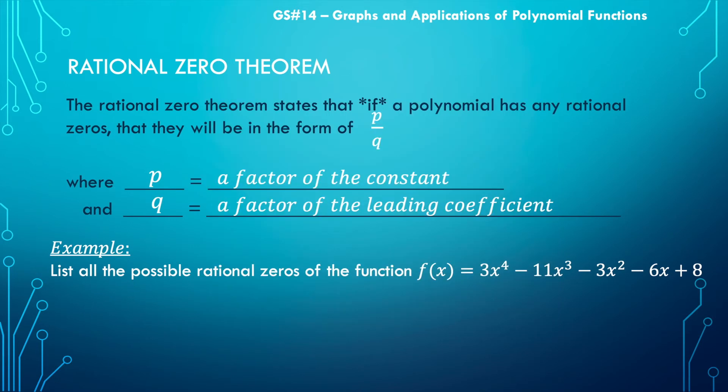But when we're talking about it in math, it just means that we can express a value as the ratio of two integers. So it's a number that can be expressed as a fraction. So if a polynomial has a rational zero, it will be in this form.